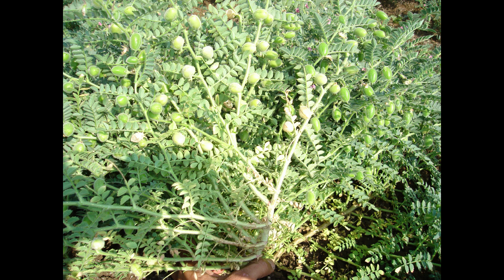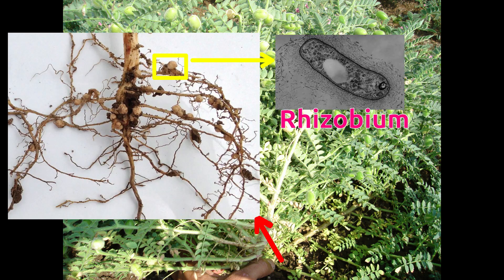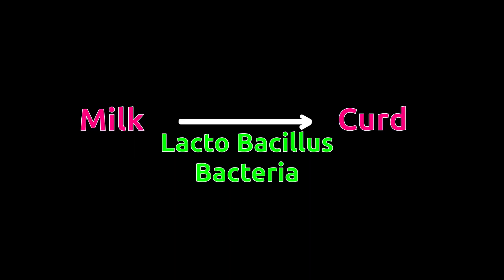In the previous classes, we have seen that Rhizobium bacteria is found in roots of some plants and helps in absorbing nitrogen from the atmosphere. We are also aware of the fact that Lactobacillus bacteria is the cause of conversion of milk to curd. In this video, we will learn about bacteria and its classification.